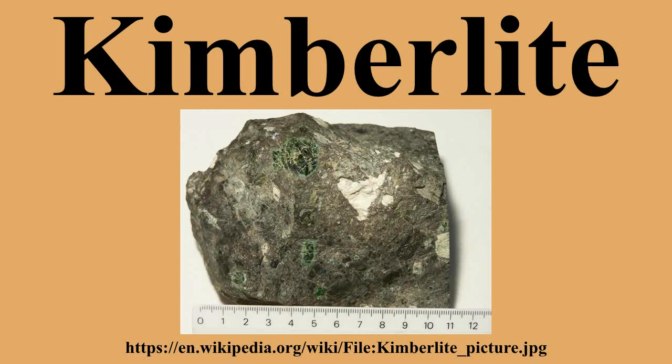Many kimberlites are emplaced as carrot-shaped vertical intrusions termed pipes. This classic carrot shape is formed due to a complex intrusive process of kimberlitic magma, which inherits a large proportion of CO2 in the system, producing a deep explosive boiling stage that causes a significant amount of vertical flaring.